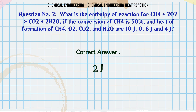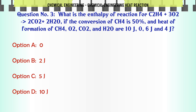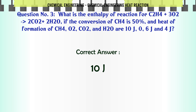What is the enthalpy of reaction for C2H4 + 3O2 → CO2 + H2O if the conversion of CH4 is 50% and heat of formation of CH4, O2, CO2, and H2O are 10J, 0, 6J, and 4J? A: 0, B: 2J, C: 5J, D: 10J. The correct answer is 10J.